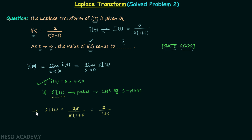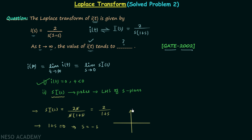To calculate the poles, we equate the denominator to 0: 1 plus S equals 0, giving S equal to minus 1. So minus 1 is the pole. Locating it in the S-plane — the y-axis is for j·omega and the x-axis is for sigma — the pole at minus 1 is clearly on the left half of the S-plane.